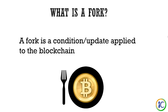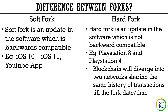So what is a fork? A fork, in simple terms, is a condition or an update that's applied to the blockchain. It's just like any other software where you get updates and new things are added. A fork is very similar to that. Here are the differences between soft fork and hard fork.